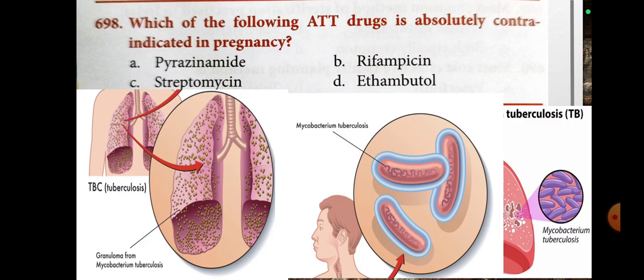Next, which of the following ATT drugs is absolutely contraindicated in pregnancy? Option A, pyrazinamide; option B, rifampicin; option C, streptomycin; option D, ethambutol.